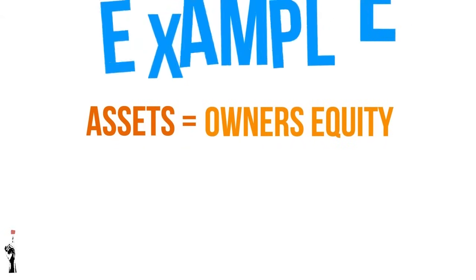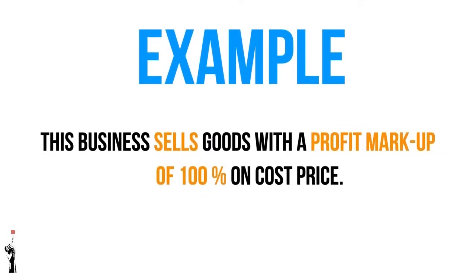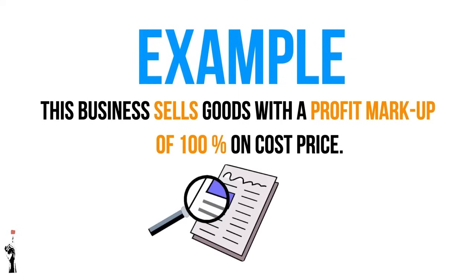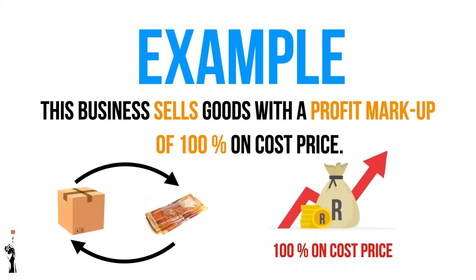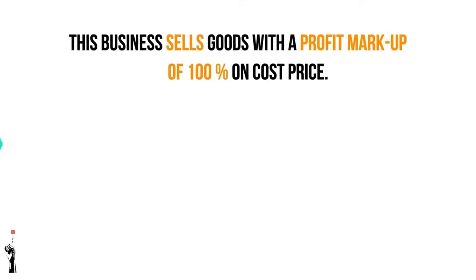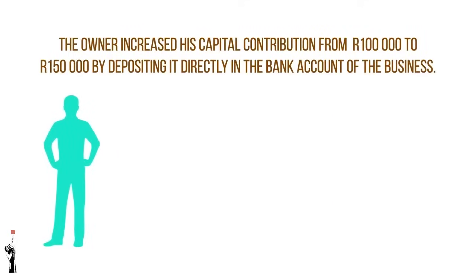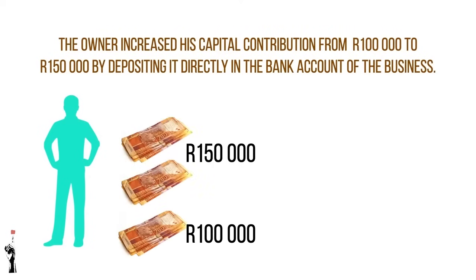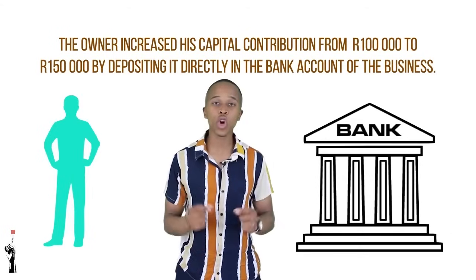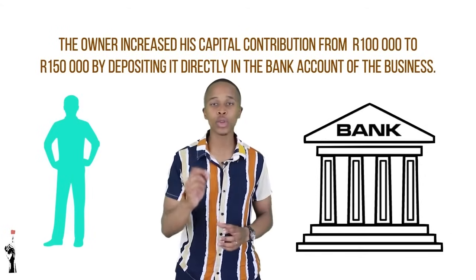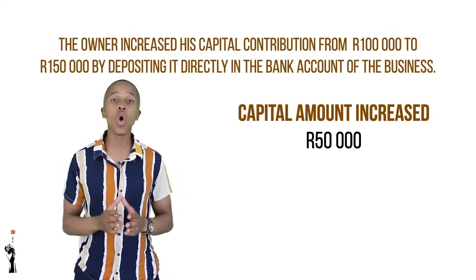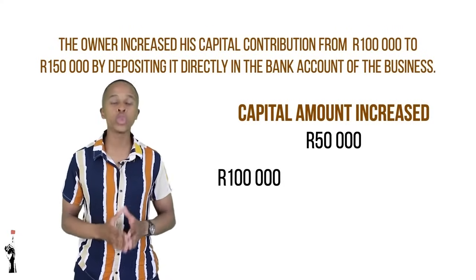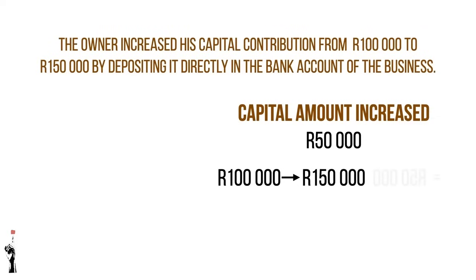Let's look at a few examples. Analyze the transaction on the screen — this business sells goods at a profit markup of 100% on cost price. The owner increased his capital contribution from 100,000 rand to 150,000 rand by depositing money into the business bank account. It is very important not to be confused: the capital contribution is 50,000 rand because the owner went from 100,000 rand to 150,000 rand.